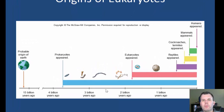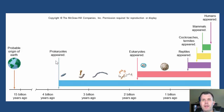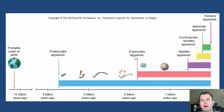Where did the eukaryotes come from? Looking at a timeline, the earth came about 4.5 billion years ago, and it took a long time — about 4 to 3.5 billion years ago — for the prokaryotes to first appear. The prokaryotes ruled the earth for about two and a half billion years, and we didn't see any eukaryotes until about 1.75 to 1.5 billion years ago. So prokaryotes have been around for a very long time; eukaryotes appeared quite recently in Earth's history.